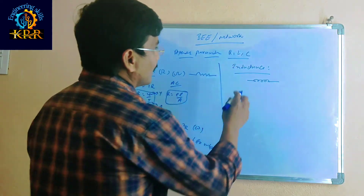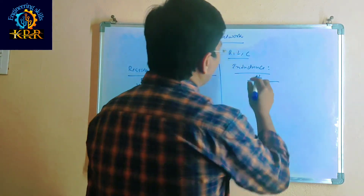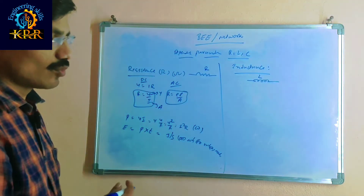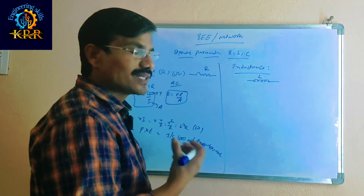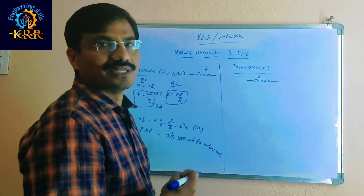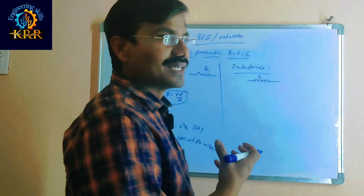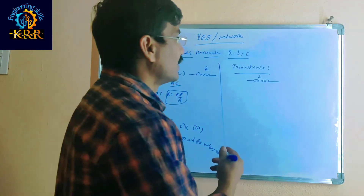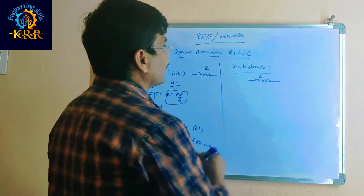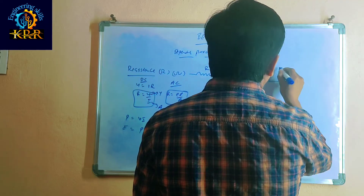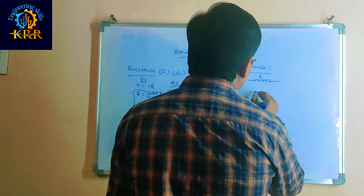This is the basic details of the resistance. After that, this is the resistor symbol. If you go for the inductor, the inductance stores dynamic energy — that is the working function of inductance, to store dynamic energy. That is the purpose of using inductance. The unit of inductance is called Henry.